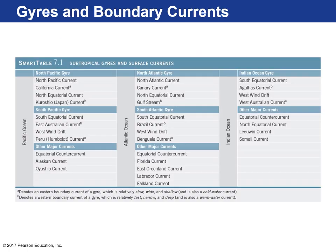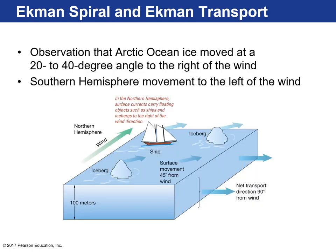Here's a table showing all the different gyres — North Pacific, South Pacific, North Atlantic, South Atlantic, Indian Ocean — and all the currents associated with each one. It's a useful reference slide when you want to know specifically about a surface boundary current.